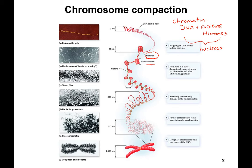That nucleosome gets compacted and organized more and more and more — this is all chromatin. The term 'chromosome' is not supposed to be used until you're talking about very compact chromatin that's ready for cell division.